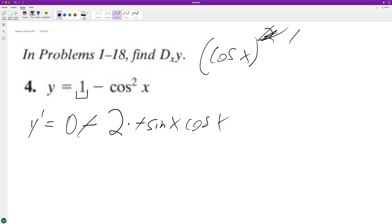So the negatives cancel out, we're left with y prime is equal to 2 sine of x cosine of x.